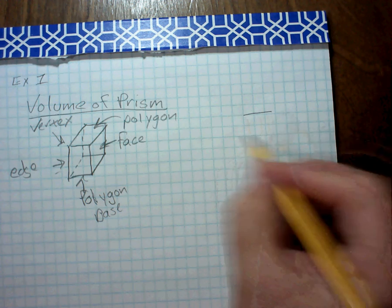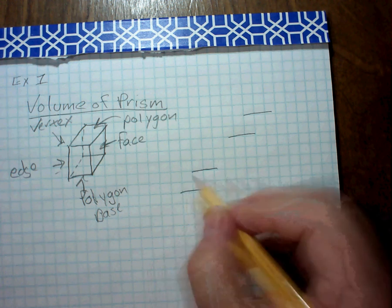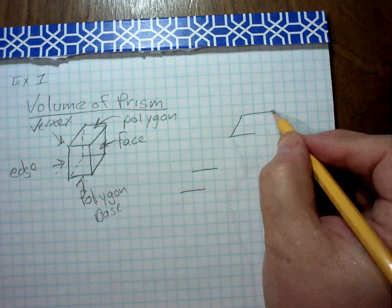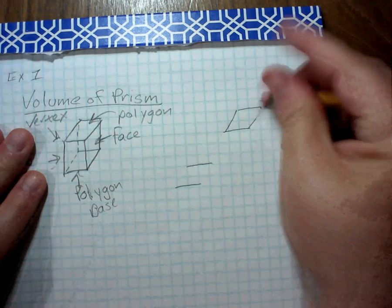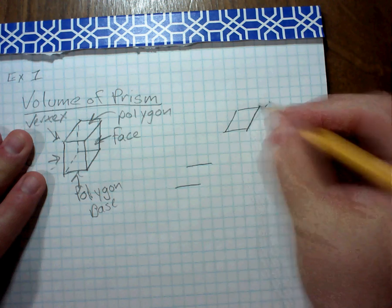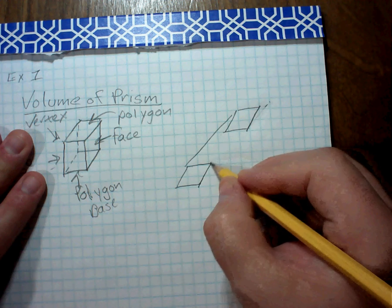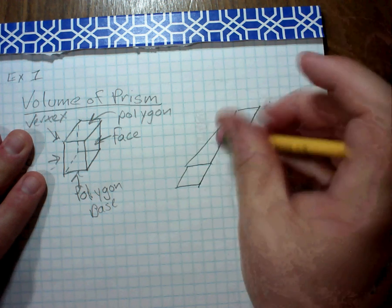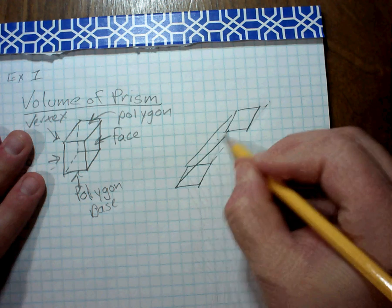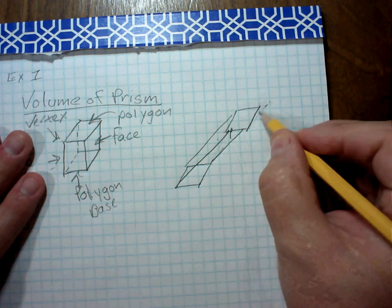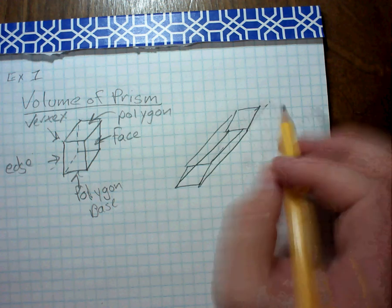Well, you can also have what we call a slanted prism. In other words, you have this polygon and it's slightly slanted. And that is a different type of shape.